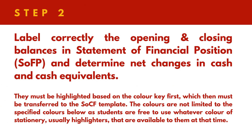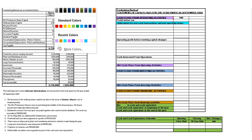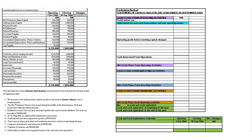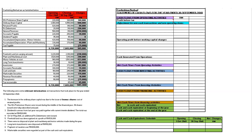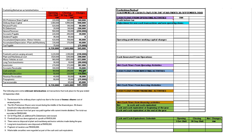Step 2: Label correctly the opening and closing balances in the statement of financial position, and determine changes in cash and cash equivalents — to be highlighted using colour key green before being transferred to the statement of cash flow template at the bottom part, as well as being transferred to the cash and cash equivalents schedule.